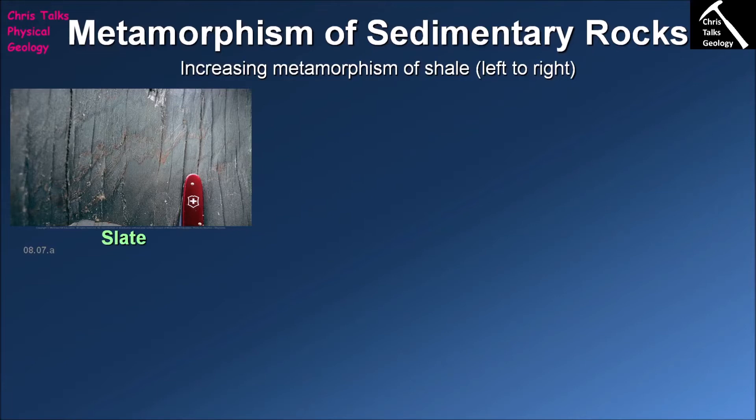If your metamorphic rock has been exposed to high temperatures and pressures, we will typically refer to it as a high-grade metamorphic rock. You might be thinking are there any numerical boundaries — the answer is not really. In geology, we actually use the minerals that we see to help us define the metamorphic grade.